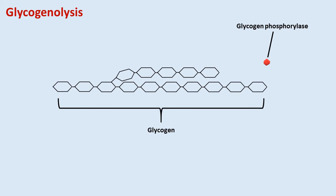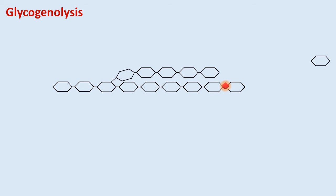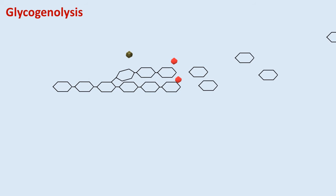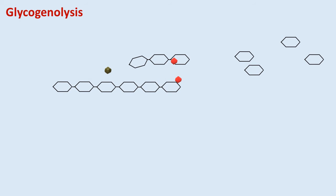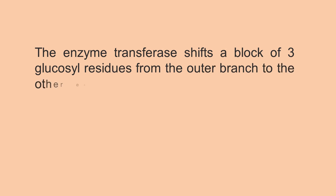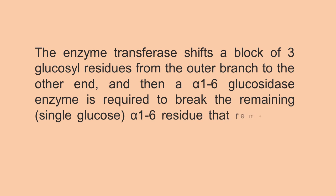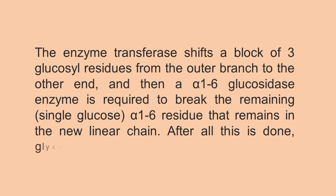Glycogen phosphorylase was the first allosteric enzyme to be discovered. It breaks up glycogen into glucose subunits and can act only on linear chains of glycogen at alpha-1,4 glycosidic linkages. Its activity comes to a halt four residues away from an alpha-1,6 branch, which are exceedingly common in glycogen. In this situation, a debranching enzyme is necessary to straighten out the chain. The enzyme transferase shifts a block of 3 glucosyl residues from the outer branch to the other end, and then an alpha-1,6 glycosidase enzyme breaks the remaining single glucose alpha-1,6 residue in the new linear chain. After all this, glycogen phosphorylase can continue.